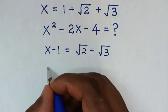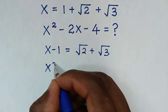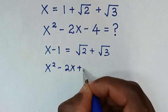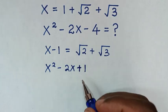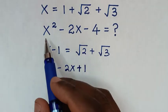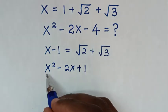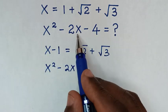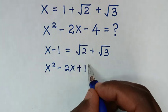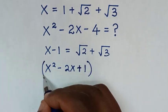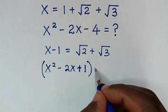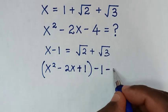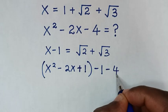Squaring (x - 1) gives x² - 2x + 1. Since we need x² - 2x in our problem, we note that x² - 2x = (x - 1)² - 1, so we subtract 1 and then also subtract 4.